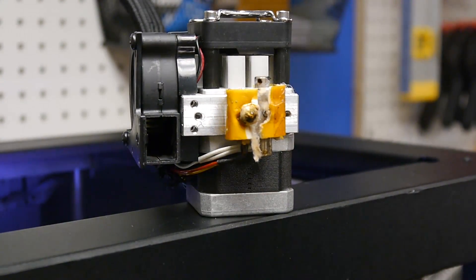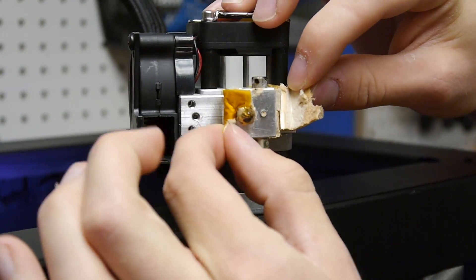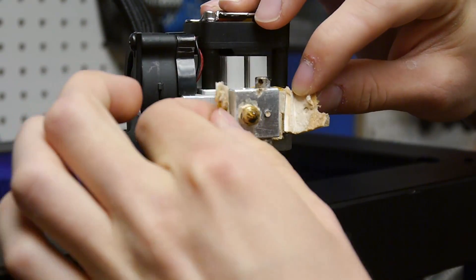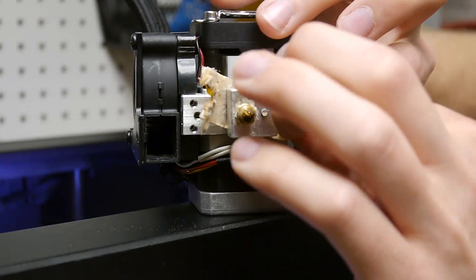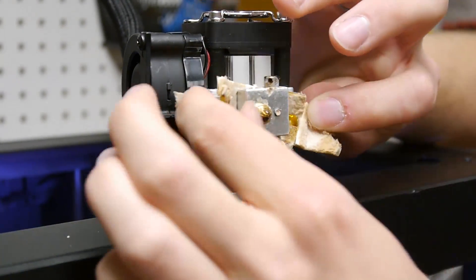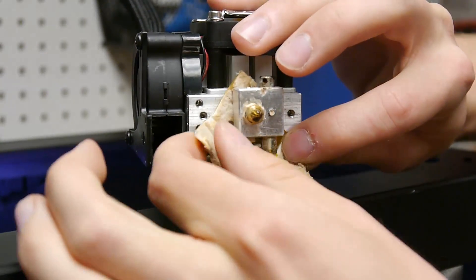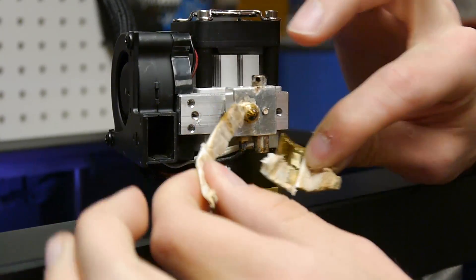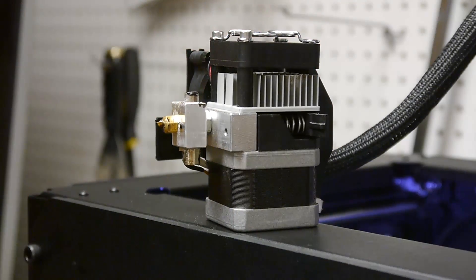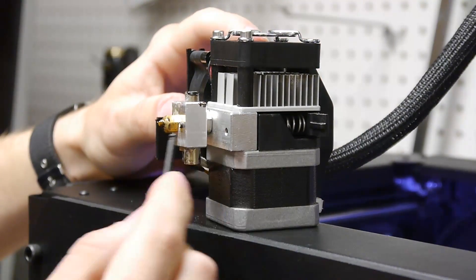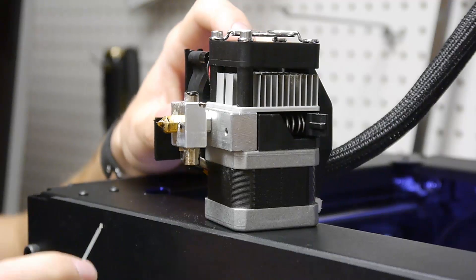So we're just going to cut that apart. This kind of falls apart, but we're going to take that apart. You can actually throw that away. What you're going to want to do is make sure that all of the debris is off the heater block.